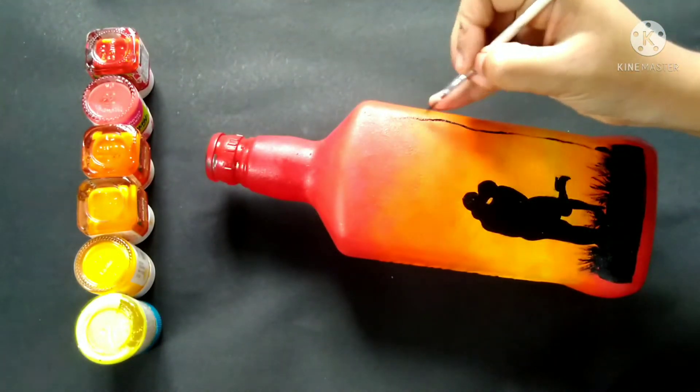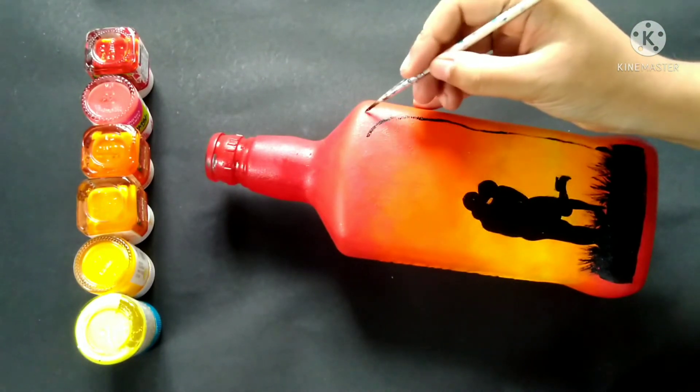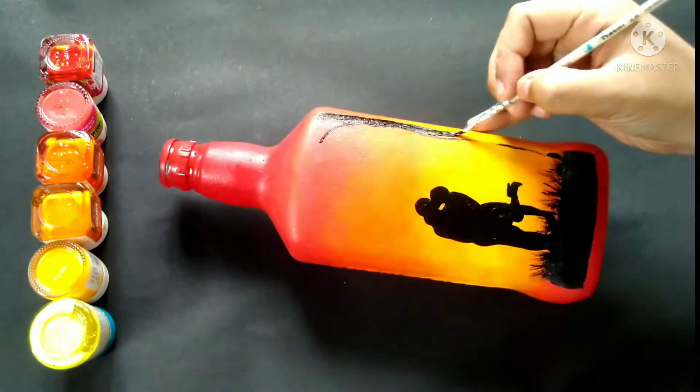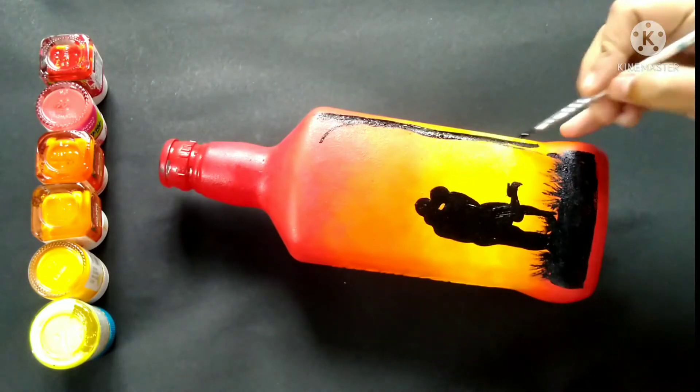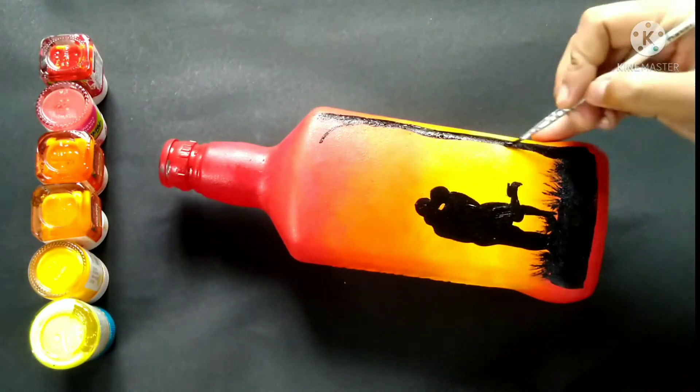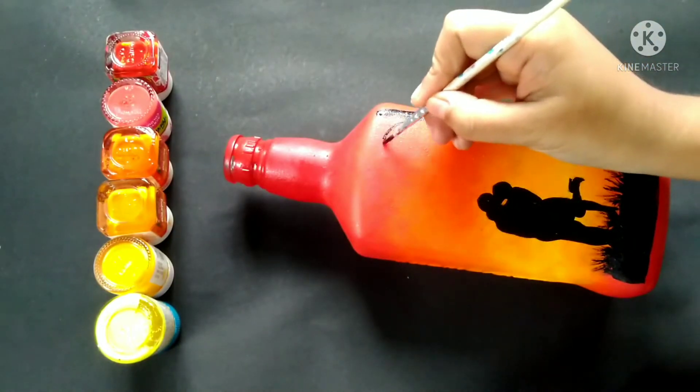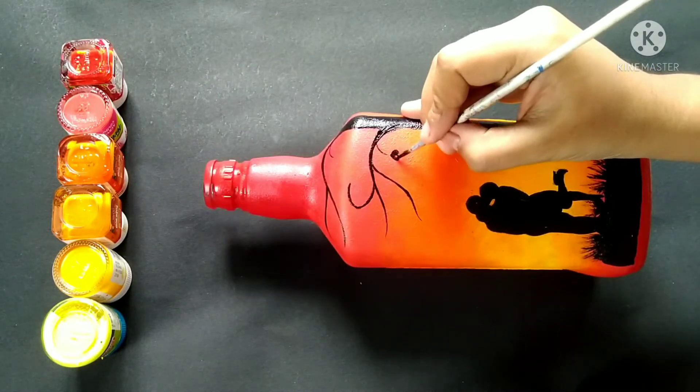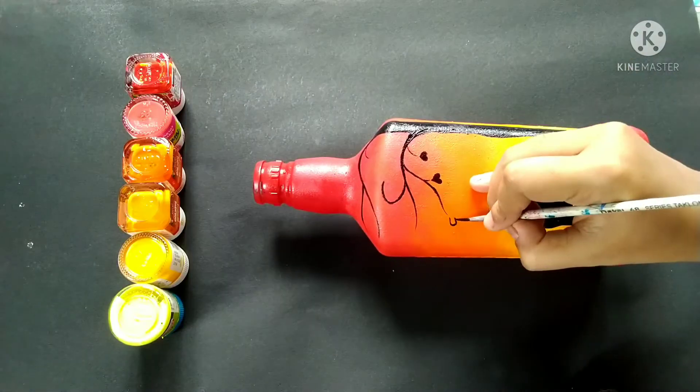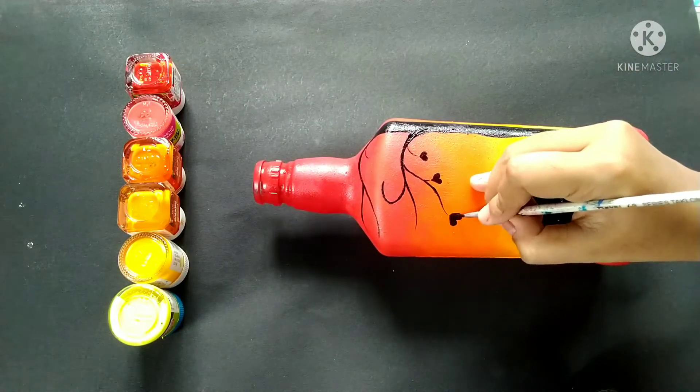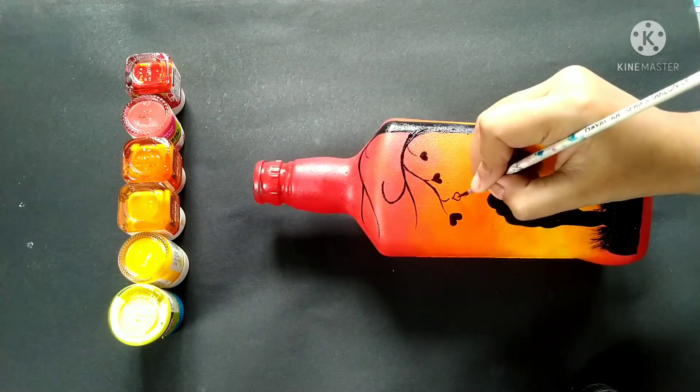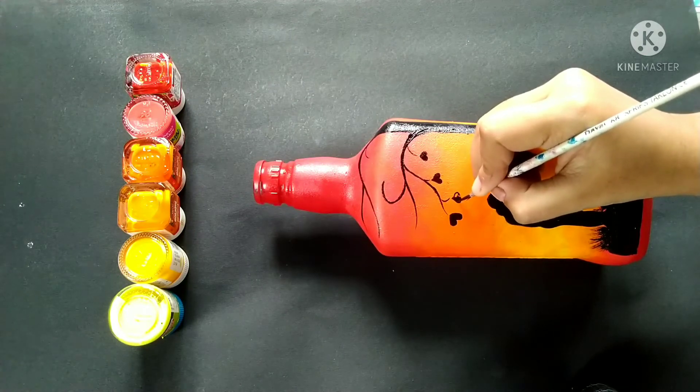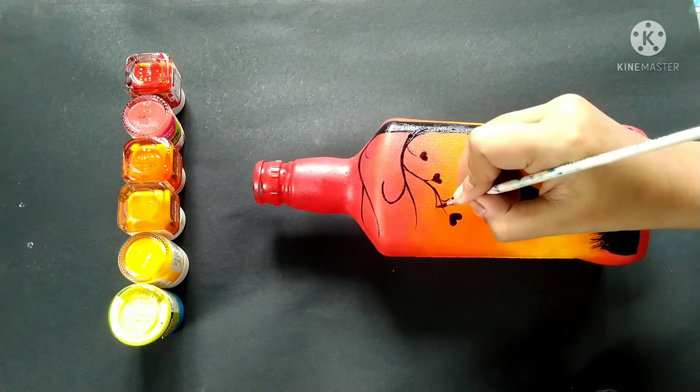Now, I am doing a tree. Now, I am making some small cute heart shaped leaves. I am doing this directly with color but if you want then you can draw this with pencil and then fill it with color.